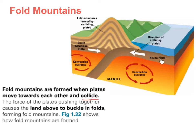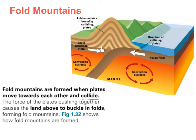Here we have an example of the Nazca plate colliding with the South American plate. The Nazca plate is the heavier plate, so this section got pulled downwards into the mantle where it melts and turns into magma. These plates colliding is caused by convection currents in the mantle. The lighter plate — the South American plate — was folded and buckled upwards, forming fold mountains. The arrows point towards each other because the plates are colliding, and this folding happens over time.